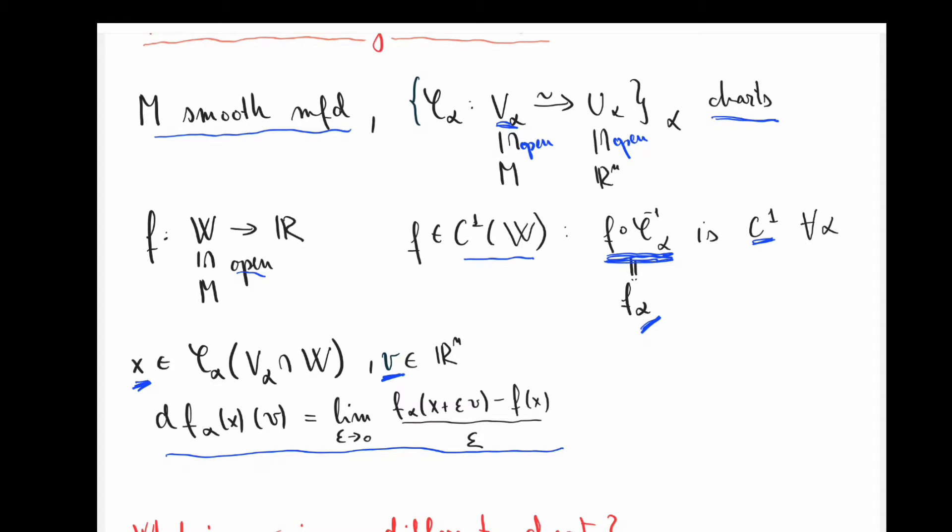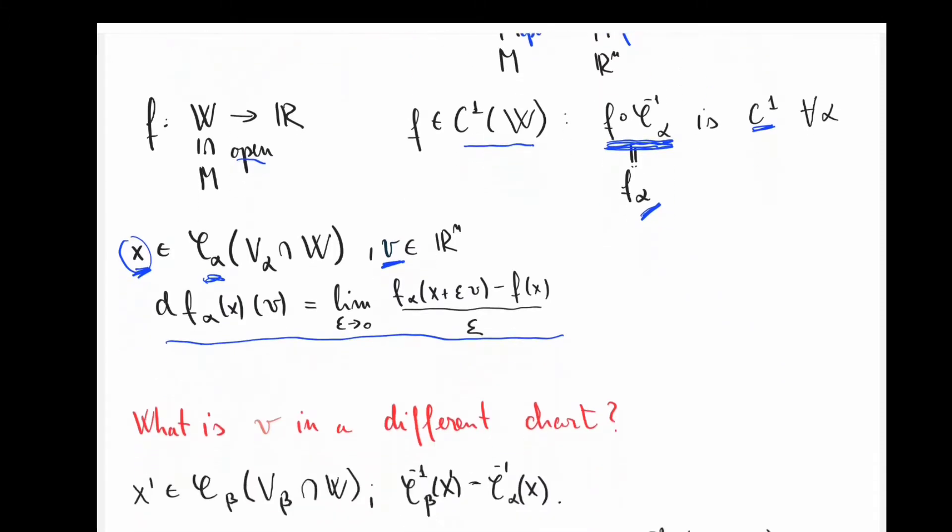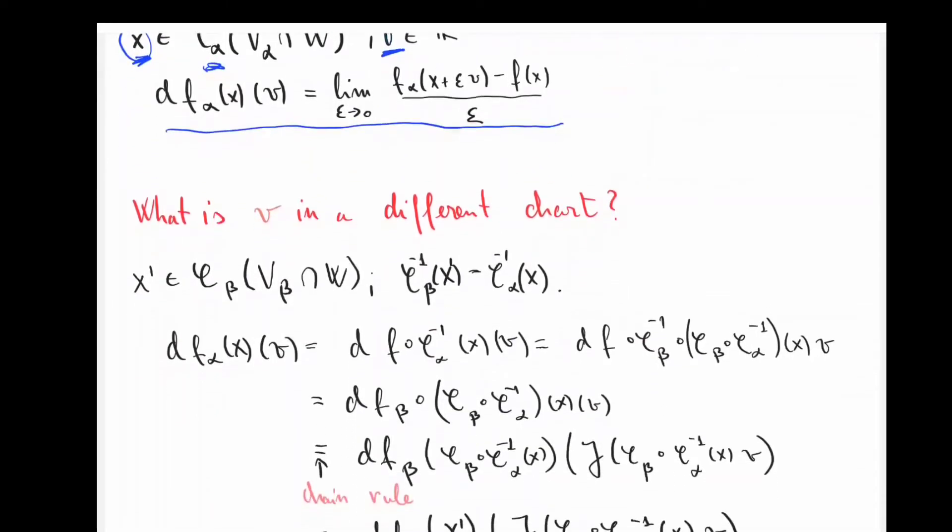Now really, the problem with this is that this description of directional derivatives depends on what chart you are in. So here, I'm working with the chart phi alpha. And then in phi alpha, this is how I take directional derivatives. But you might be interested in working with a chart, let's call phi beta. So really the discussion of the tangent bundle starts.